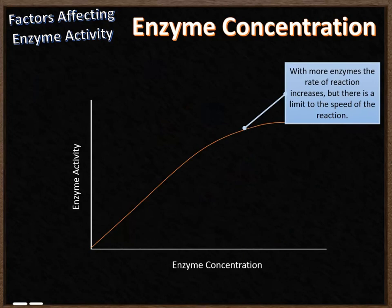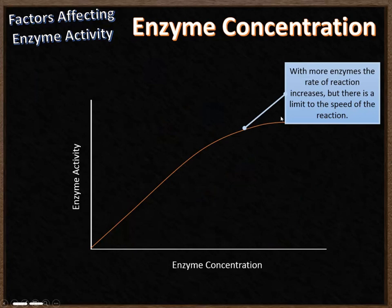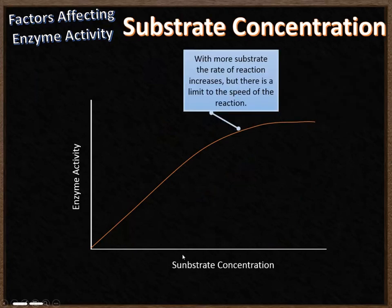The next factor is enzyme concentration. If you increase the concentration of enzymes, enzyme activity rises. However, the graph isn't a straight line continuing forever — it curves off and reaches an upper limit, because there's a limit to how fast the reaction can go. Keep increasing concentration and eventually the rate of reaction can't increase any further. The same idea applies to substrate concentration: increase the amount of substrate and the enzymes work faster, but eventually you reach a limit where the enzymes can't break down the substrate any faster.